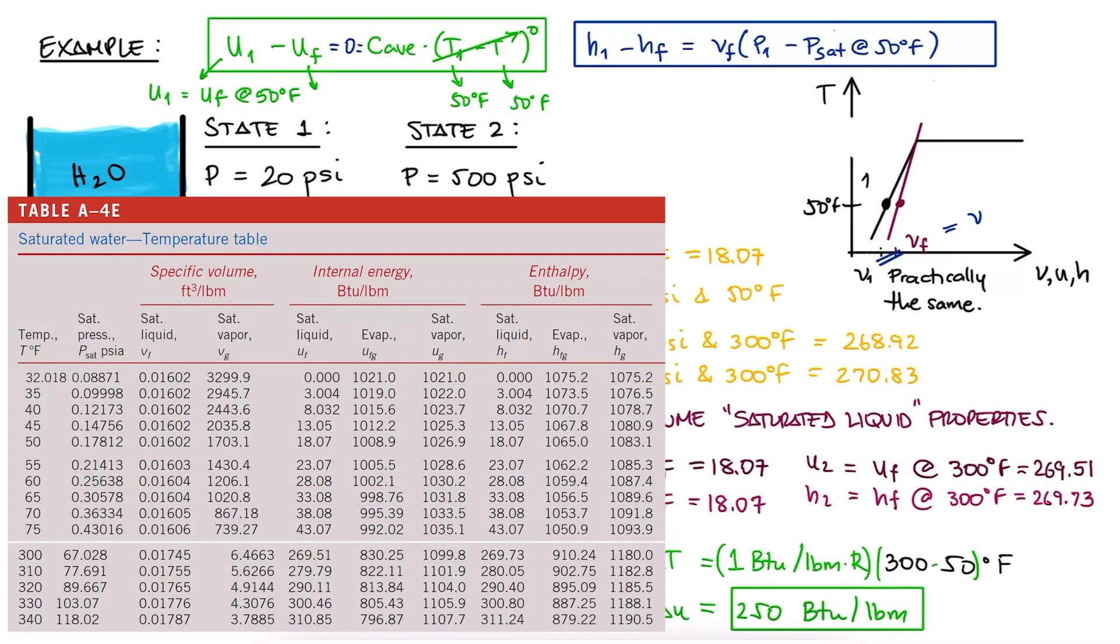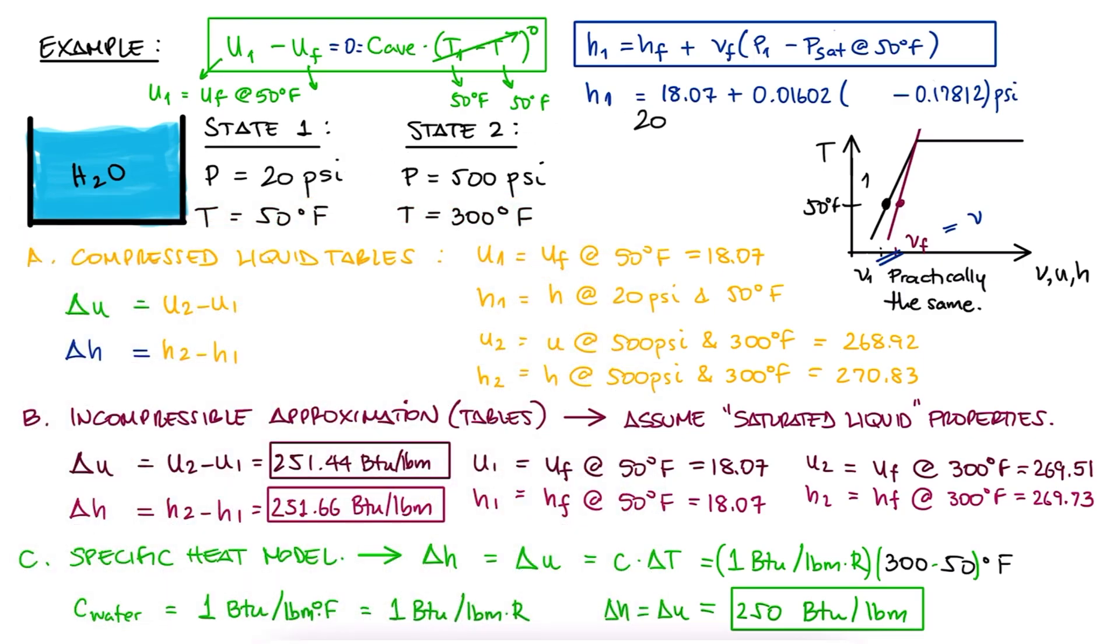We write down Hf and Vf for 50 degrees Fahrenheit, the saturation pressure at 50 degrees Fahrenheit, substitute pressure 1, do a quick unit conversion, and find that H1 is 18.13 BTU per pound mass.